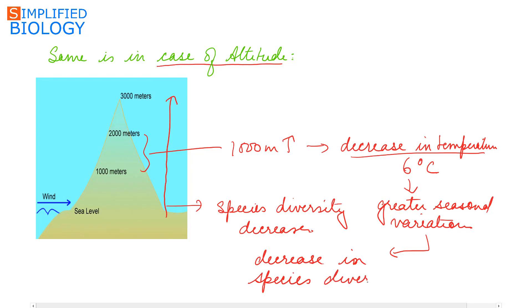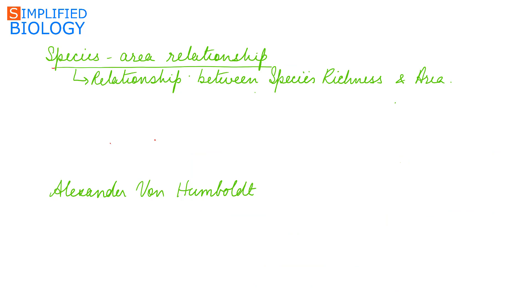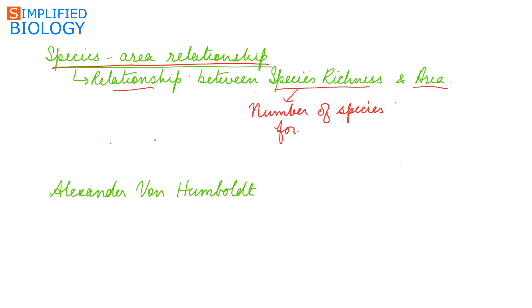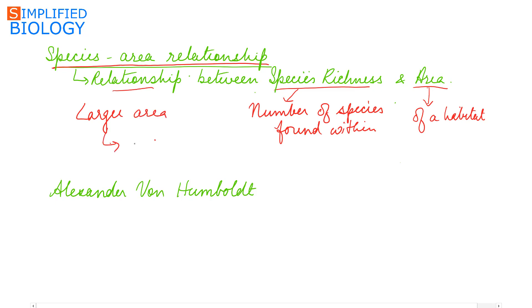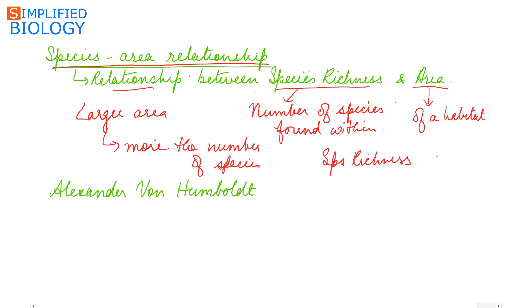The next pattern of biodiversity is the species-area relationship — the relationship between species richness and area. Species richness is the number of species found within an area of a habitat. The larger the area, the greater the species richness. Species richness is directly proportional to area.